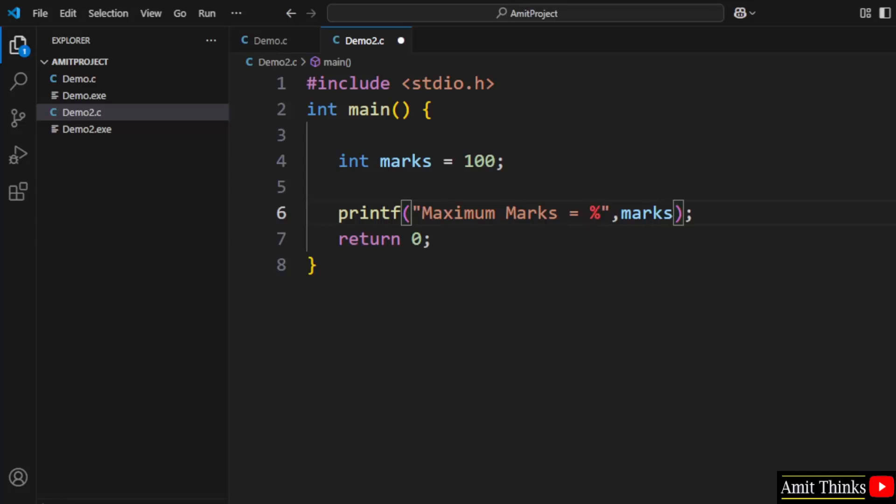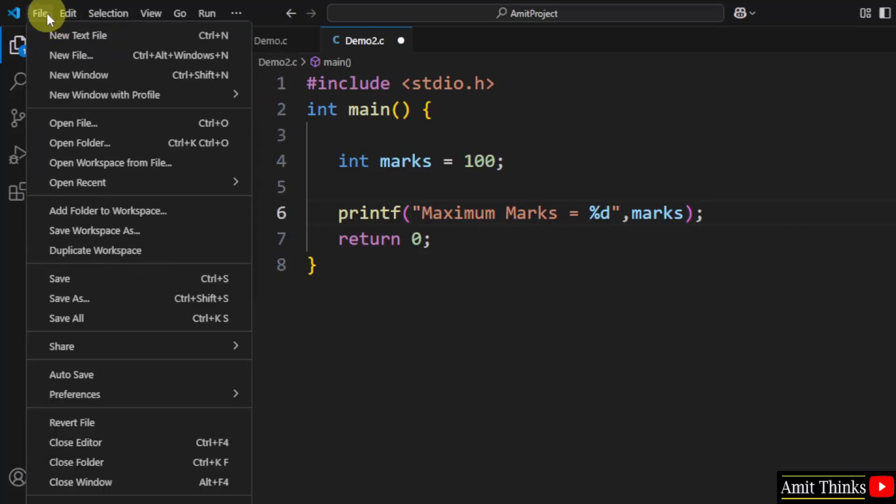For integer, you have the format specifier %d. Similarly, for other data types, we have other format specifiers which we will be covering in the upcoming lessons. Right now, for integer, you have %d format specifier. Whenever you are adding an integer variable, you need to add %d.